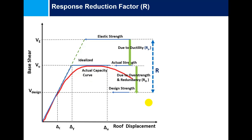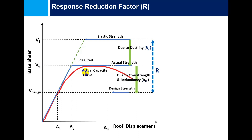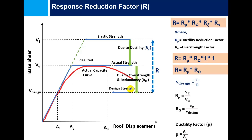The capacity comes from over-strength of materials like reinforcement bars and concrete, redundancy of the structure, and the damping present in the structure. Although we take the design force as V-design, the actual capacity of the structure obtained during pushover analysis or non-linear time history analysis is V-u. From V-design to V-u it is called the over-strength factor or redundancy factor.